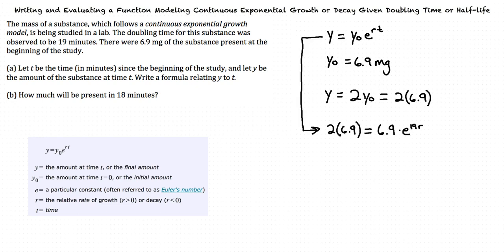This results in 2 times 6.9 equals 6.9 times e to the power of 19 times r. We can divide both sides of the equation by 6.9, and this gives us 2 equals e to the power of 19 times r. How can we solve for r now? We can take the natural logarithm of both sides of the equation. When we take the natural log of an exponential expression with base e, it simplifies to just the exponent.